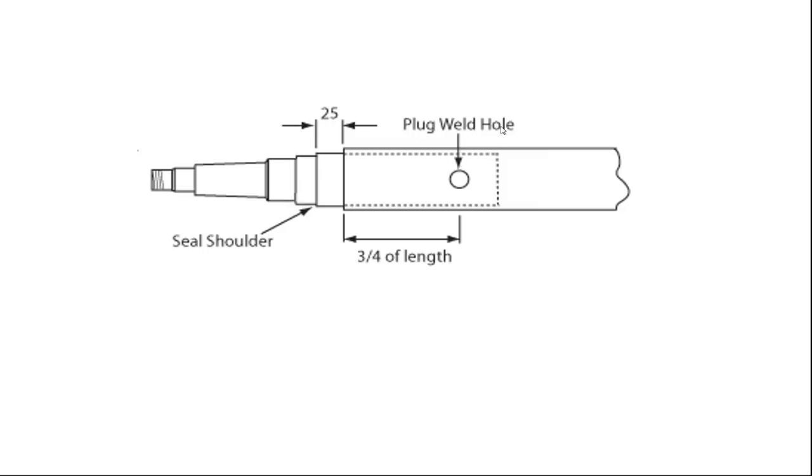The plug weld hole will need to be drilled through the square hollow section approximately three quarters of the length of the way down the stub. And the stub will need to sit 25 millimeters from the square hollow section to the seal shoulder of the stub axle.